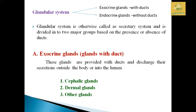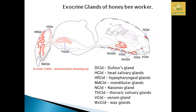The exocrine gland is a ductful gland. These glands have a duct and the discharge of secretion happens outside the body or into the lumen. The glands include cephalic gland, dermal gland, as well as some other glands. To study about the exocrine gland in the insect body, we can see the example of exocrine glands of a honeybee worker, which includes: Dufour's gland, head salivary gland, hypopharyngeal gland, mandibular gland, Nasanov gland, thoracic salivary gland, venom gland, as well as wax gland.